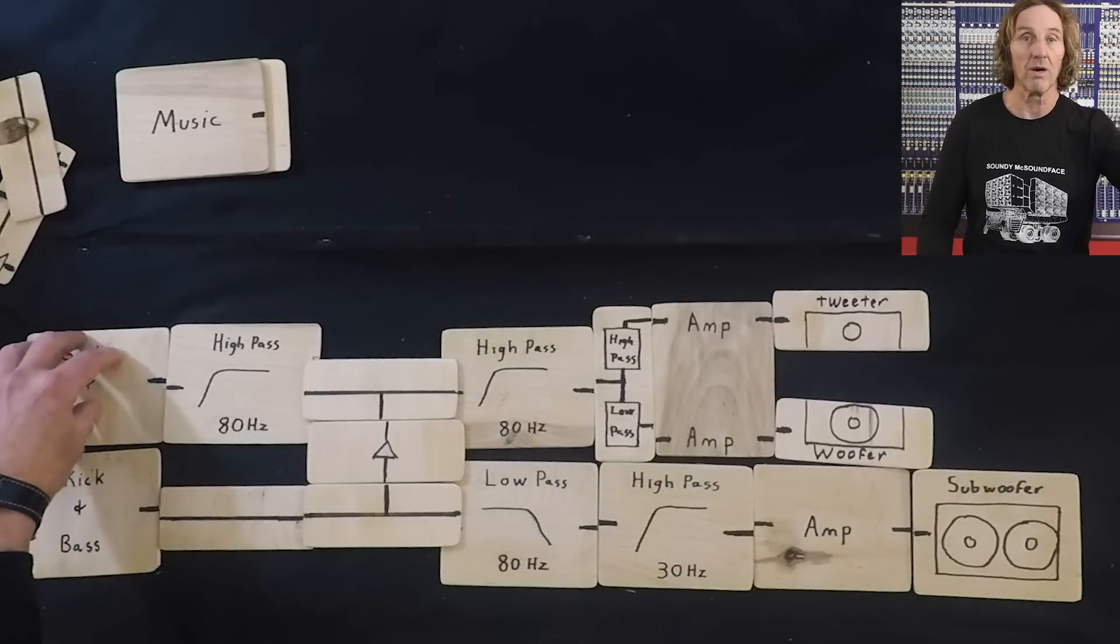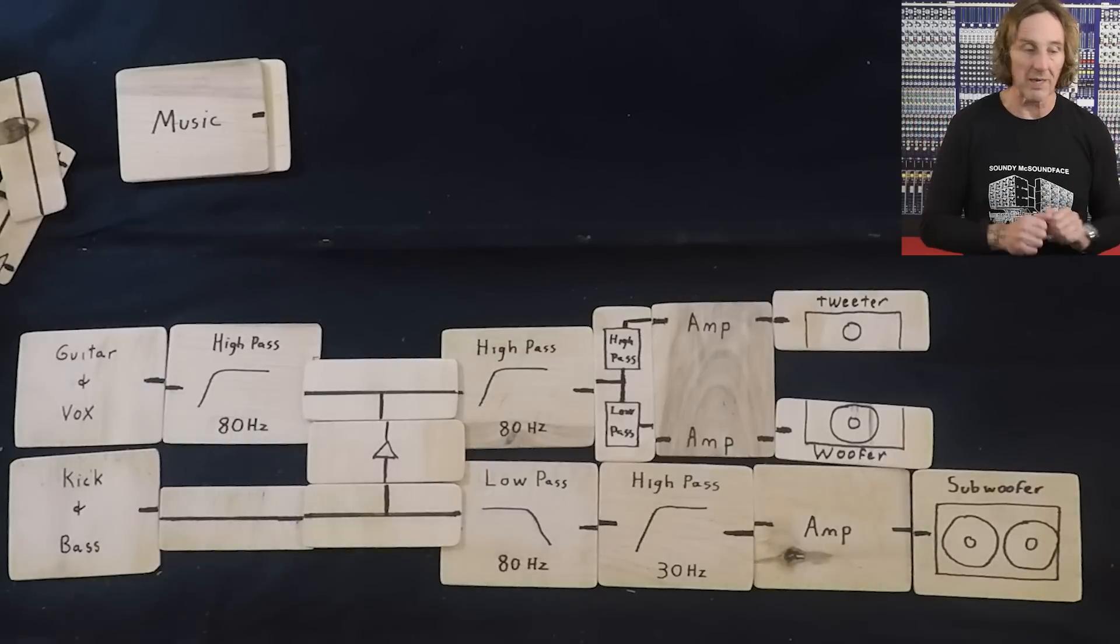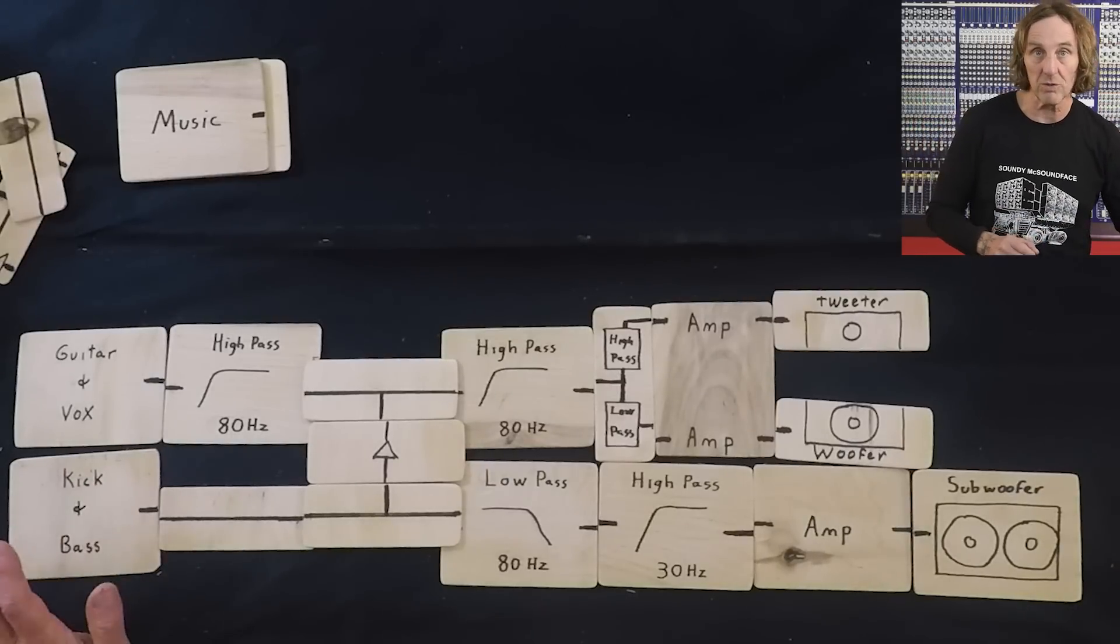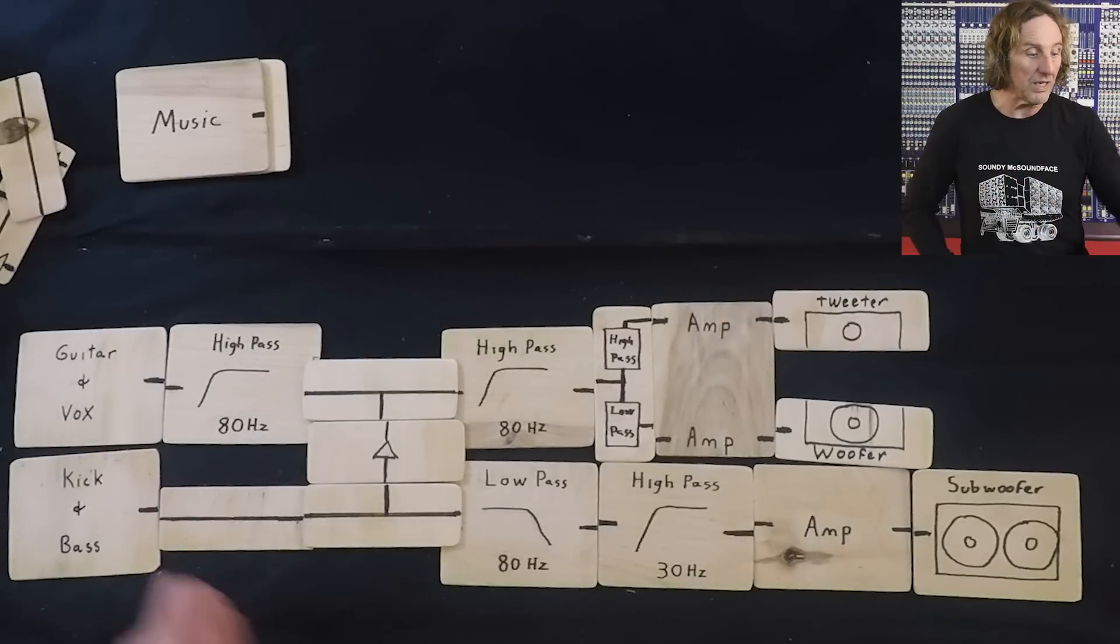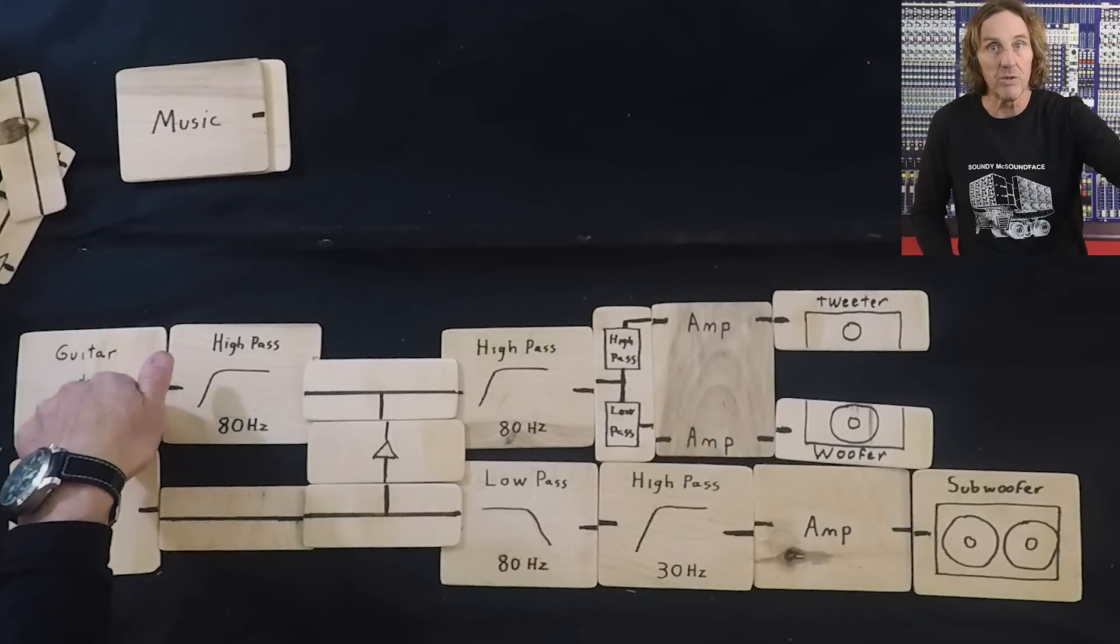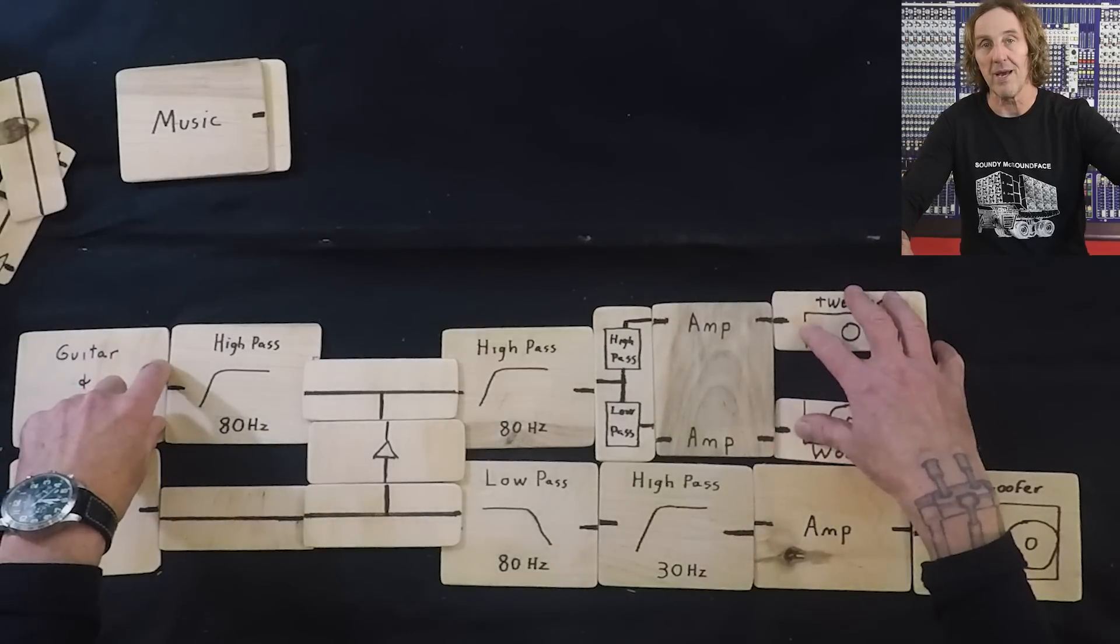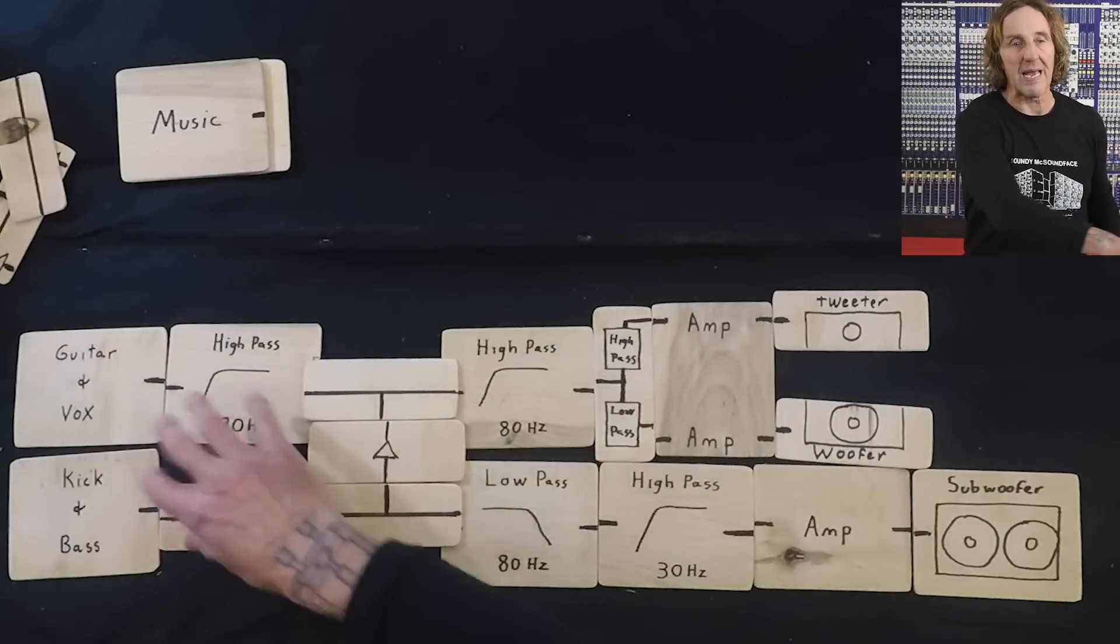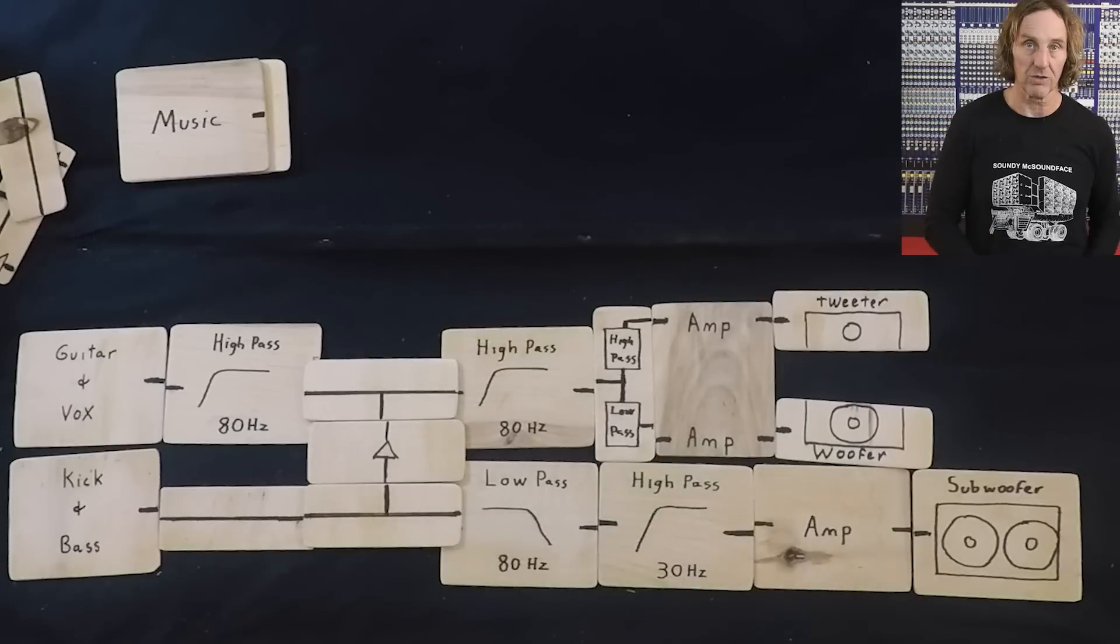If you bring the guitar and vocal subgroups up and down same thing. It only goes to main PA. You bring the kick and bass subgroups up and down it goes to the main PA and the subs. If you EQ the guitar and boost low end it will boost the low end in the main PA but it won't add more guitar to the subwoofer so you gain another level of control.